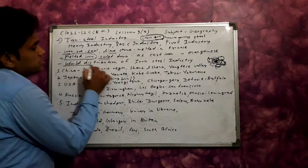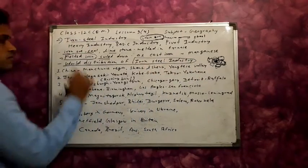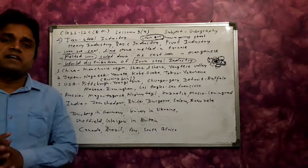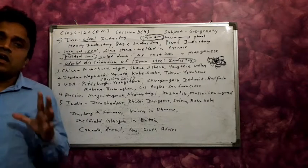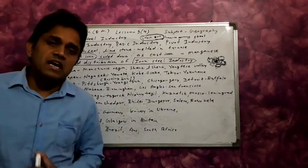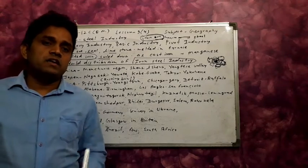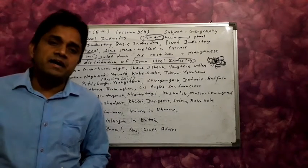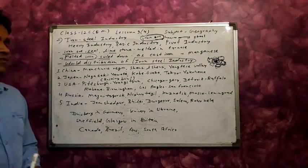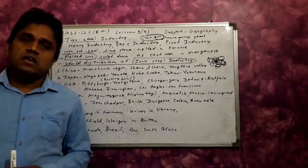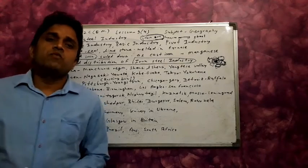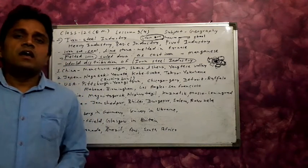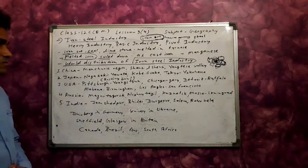Next is the world distribution of the iron and steel industry. Most countries of the world have the iron and steel industry where iron ore and coal are found. Developed countries started the iron and steel industry first, followed by developing countries, and now underdeveloped countries also establish it where raw materials are available.